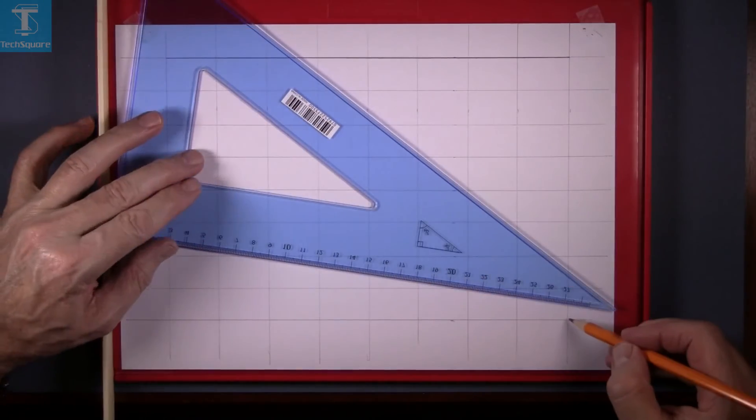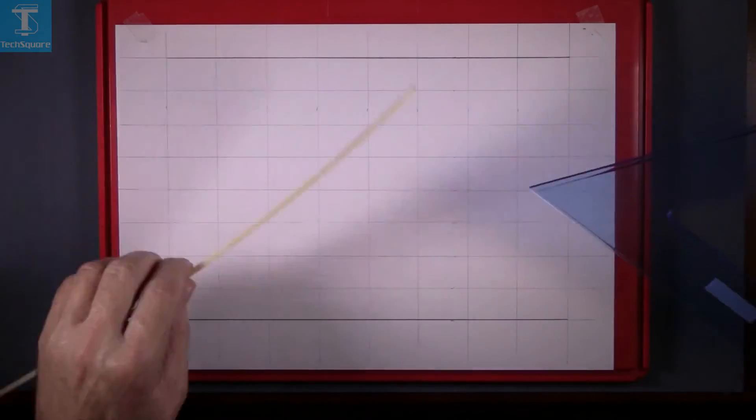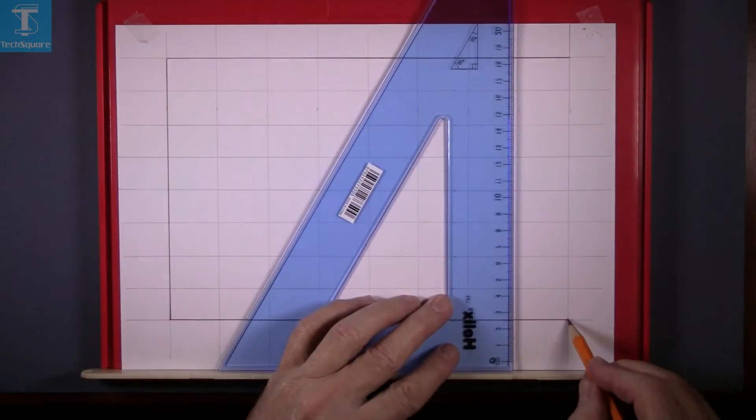Then do the bottom line next, which is point C to D. Then move the guide rule and proceed to complete the rectangle.